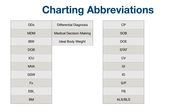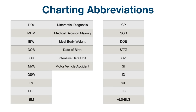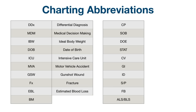IBW: ideal body weight. DOB: date of birth. ICU: intensive care unit. MVA: motor vehicle accident. GSW: gunshot wound. FX: fracture. EBL: estimated blood loss.